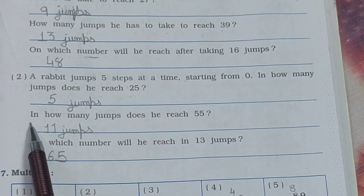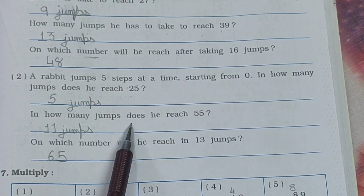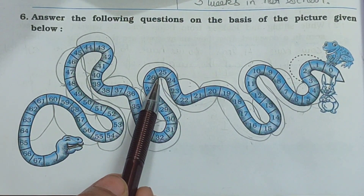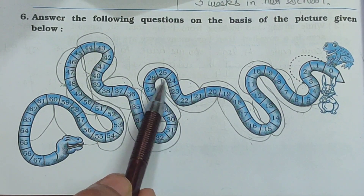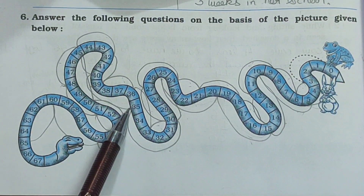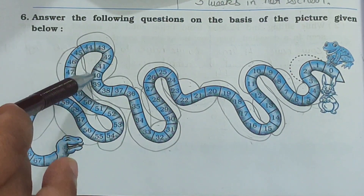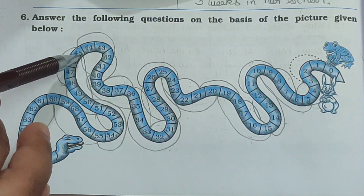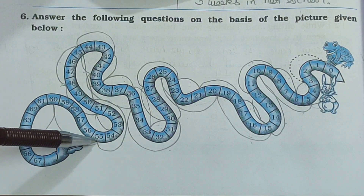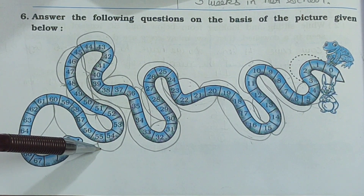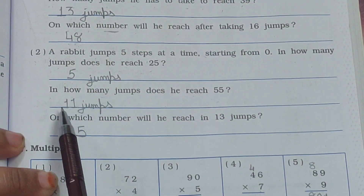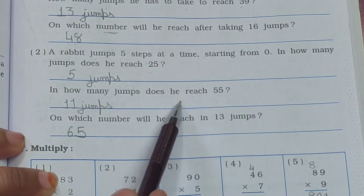The second question: in how many jumps does the rabbit reach 55? We know 25 takes 5 jumps. Continuing: 25 to 30 is the 6th, 30 to 35 is the 7th, 35 to 40 is the 8th, 40 to 45 is the 9th, 45 to 50 is the 10th, and 50 to 55 is the 11th jump. So the answer is 11 jumps to reach 55.